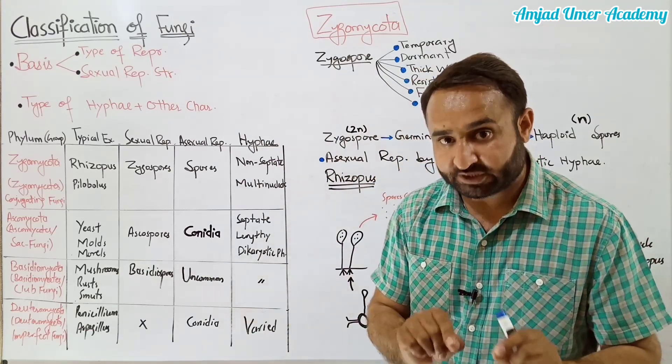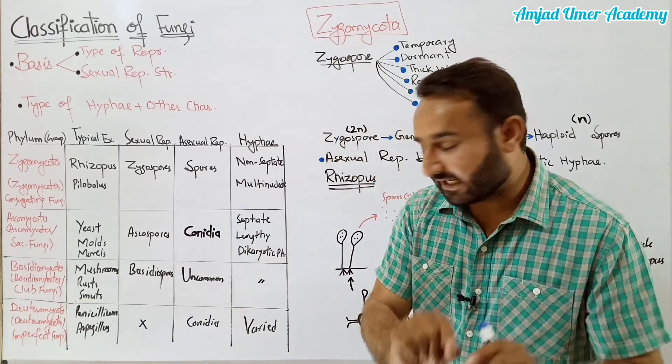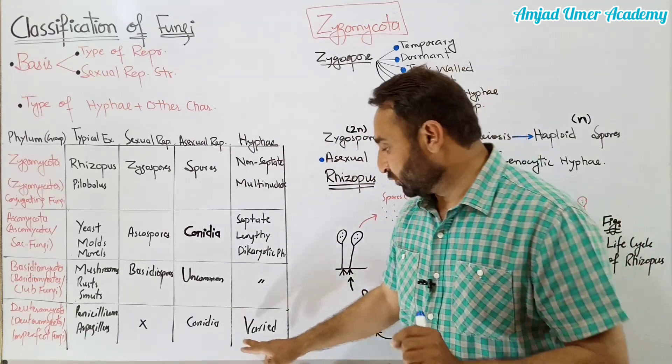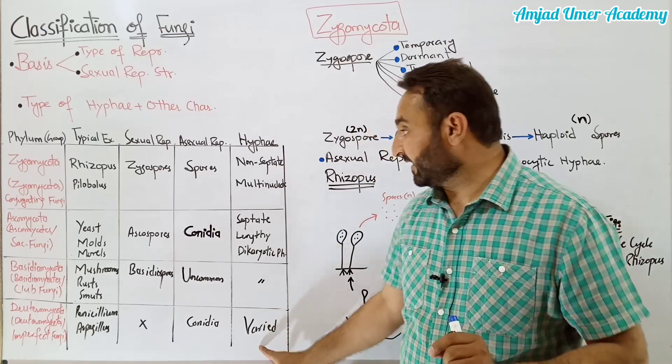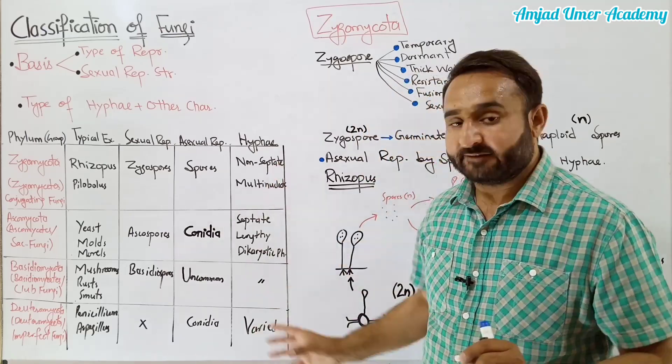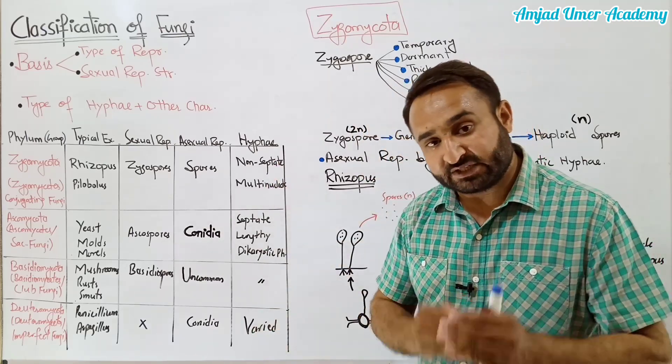Students, yaad rakhein: Deuteromycota mein conidia hote hain - ye naked spores hain. Inki hyphae varied aur different hoti hain, aur ye septate aur non-septate dono tarah ki ho sakti hain.